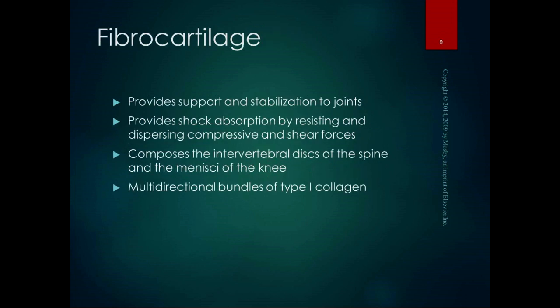Fibrocartilage provides support and stabilization to joints and shock absorption by resisting and dispersing compressive and shear forces. Intervertebral discs are made of fibrocartilage, as are the menisci of the knees, the pubic symphysis, and little fibrocartilage discs in our wrists and ankles. Think of it as support and stabilization of joints — multidirectional bundles of tough type 1 collagen that allow forces from different directions to be dispersed.